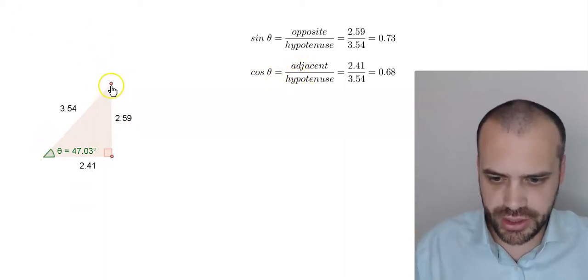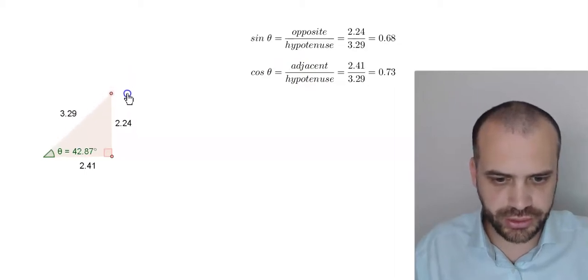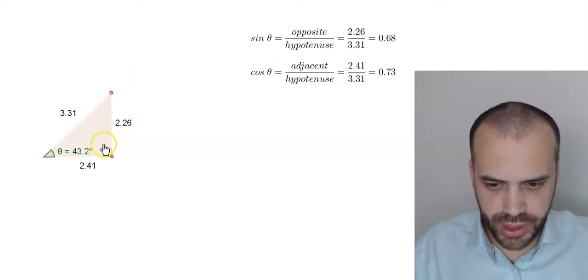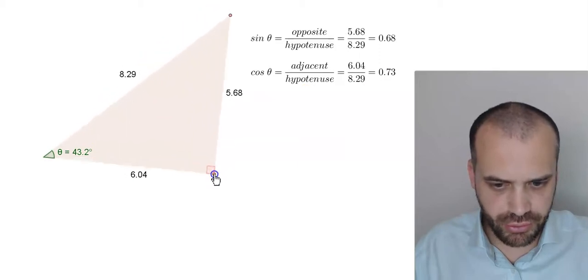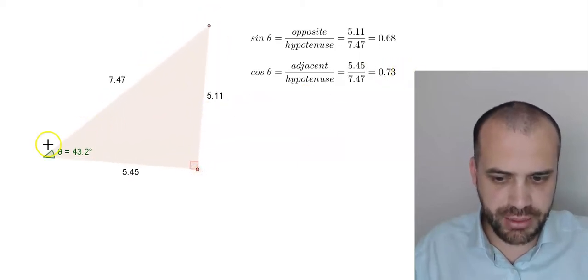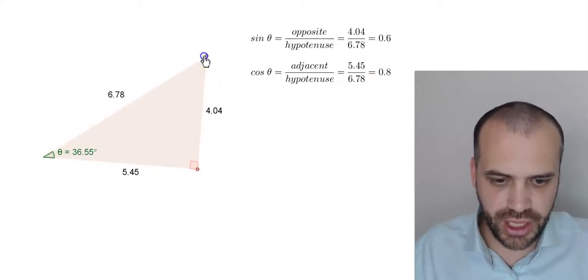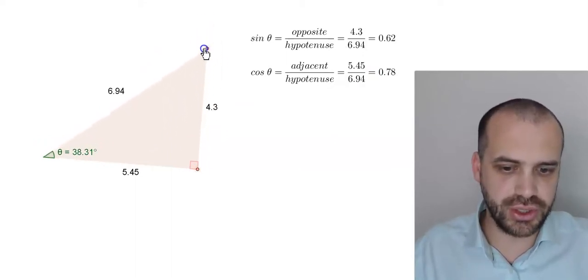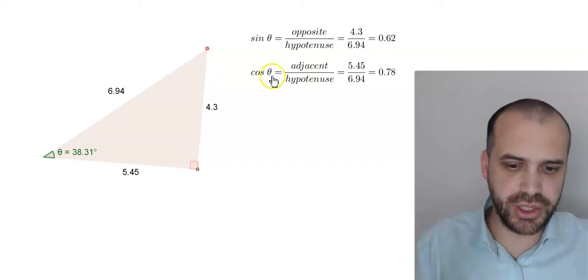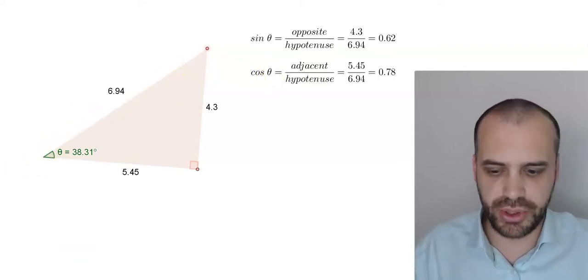And again you can see it doesn't matter how I change my triangle, we can always expect for that ratio to be the same as long as that angle is the same. Of course if I change that angle, those ratios change. But cos theta is a ratio between the adjacent side and the hypotenuse.